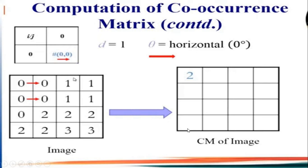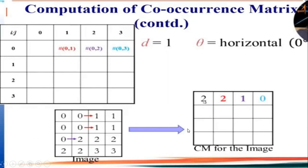Similarly, we find element C01 — the number of times gray level 1 appears to the right of 0. Scanning through the image: in the first row, 0 has 1 to its right — first pair found. In another row, 0 again has 1 to its right — second pair found. So for element C01, we substitute the value 2.